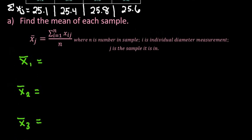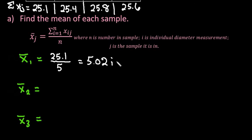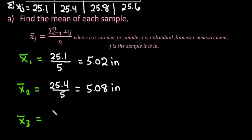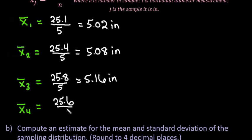Now to find the individual sample mean, we take each of those sums and divide by the number of observations in the sample. For sample one, X-bar-1 equals 25.1 divided by 5, which gives 5.02 inches. For sample two, 25.4 divided by 5 gives 5.08 inches. For sample three, 25.8 divided by 5 gives 5.16 inches. For sample four, 25.6 divided by 5 gives 5.12 inches.